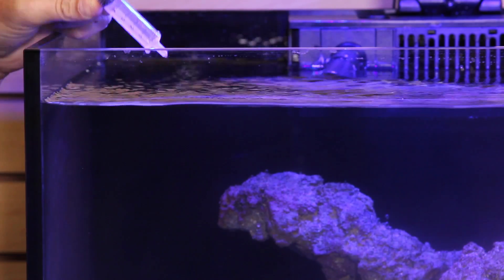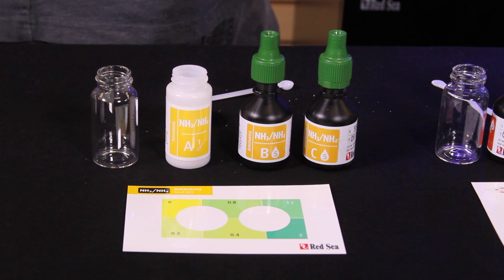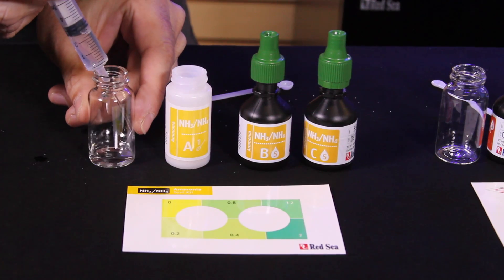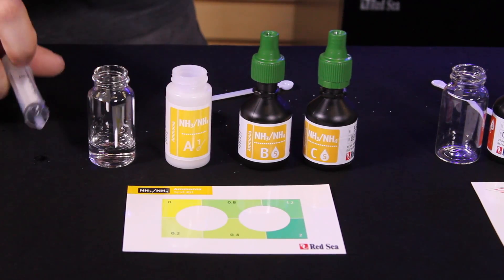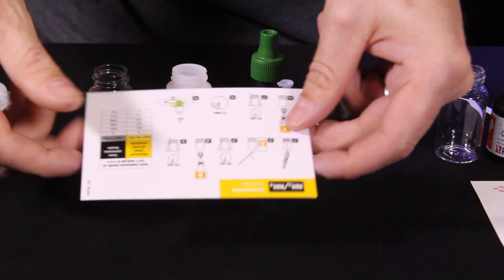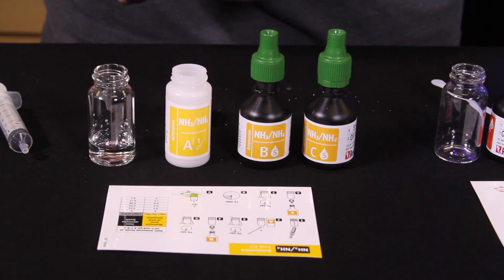All right, I'm going to start by drawing five milliliters of sample water from our aquarium. I'm going to put that into our test vial. Now each of the test kits comes with a card with directions on one side and a color comparison chart on the other.